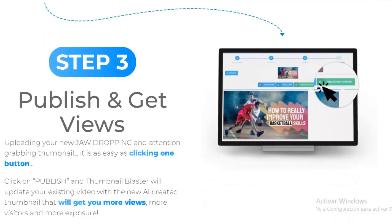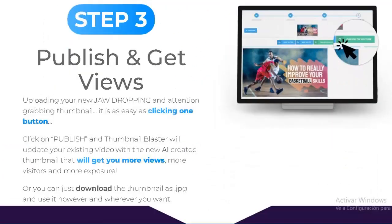Step three: publish and get views. Uploading your new jaw-dropping, attention-grabbing thumbnail is as easy as clicking one button. Click publish and Thumbnail Blaster will update your existing video with the new AI-created thumbnail that will get you more views, more visitors, and more exposure. Or you can just download the thumbnail as a .jpg and use it however and wherever you want.